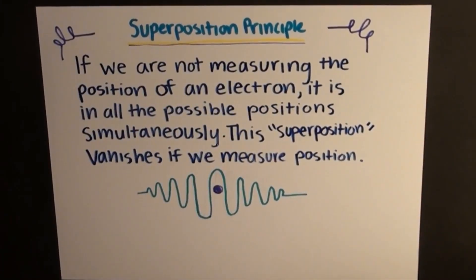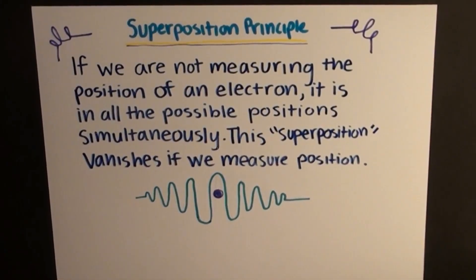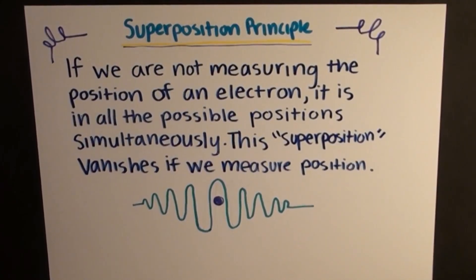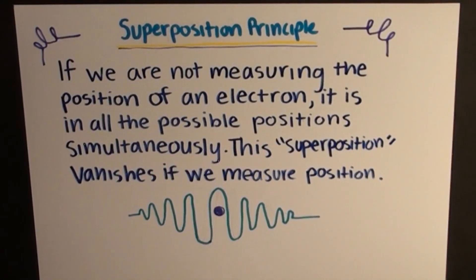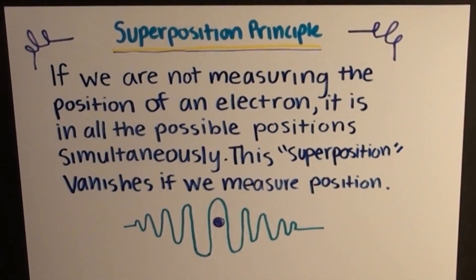This occurrence is the foundation of the superposition principle, which states: if we are not measuring the position of an electron, it is in all possible positions simultaneously. This superposition vanishes if we measure a position.